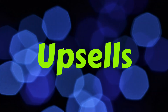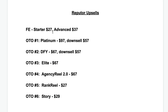Now let's take a quick look at the upsells. The front-end product has a starter version for $27 or an advanced version for $37. The first upsell is their Platinum version at $97, with a downsell of $57 with fewer features. OTO number 2 is a done-for-you version for $67, downsell $57. Upsell number 3 is their Elite version for $67. Upsell number 4 is Agency Reel 2.0 for $67 — a previous product they've launched. OTO number 5 is Rank Reel for $27, and upsell number 6 for $29 is another product called Story.